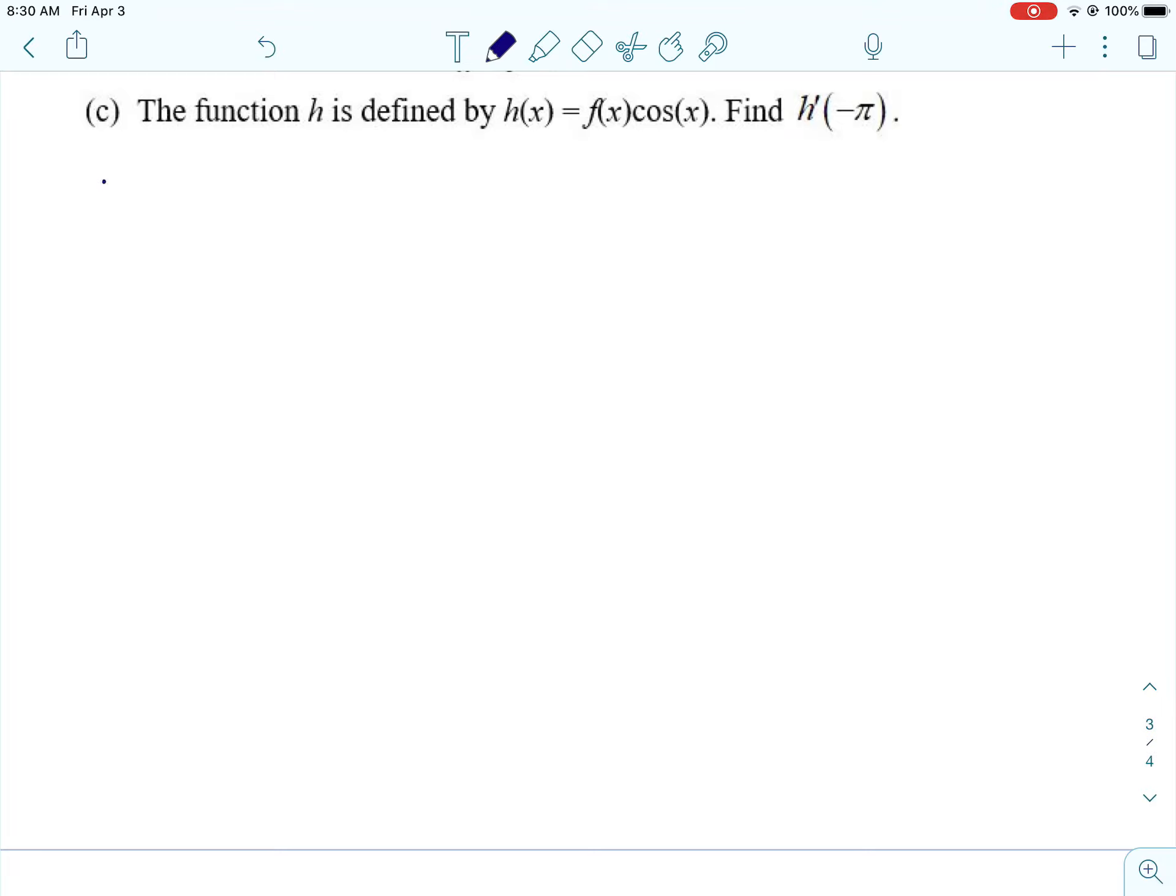Okay, let's look at C. We have a new function, which is H of X and it's defined as F of X times the cosine of X. We want to find H prime of negative π. Okay, so the first thing we want to do is find H prime of X. And to do that, we're going to use the product rule. And so, the order you do the, which one you take the derivative of and which one you leave alone doesn't matter. Because it's a multiplication and addition. So, I'm just going to leave the first one alone.